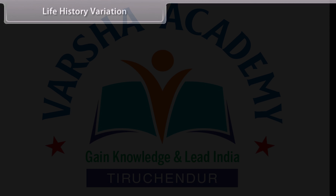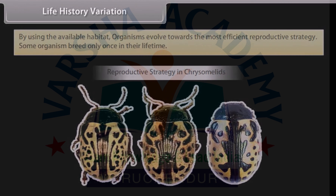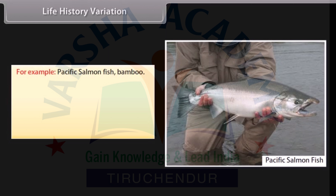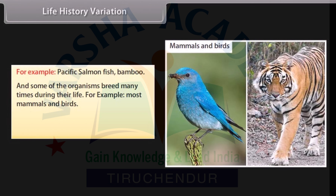Life history variation: By using the available habitat, organisms evolve towards the most efficient reproductive strategy. Some organisms breed only once in their lifetime, for example Pacific salmon fish and bamboo. Some organisms breed many times during their life, for example most mammals and birds. The evolution of an organism depends upon biotic and abiotic factors.